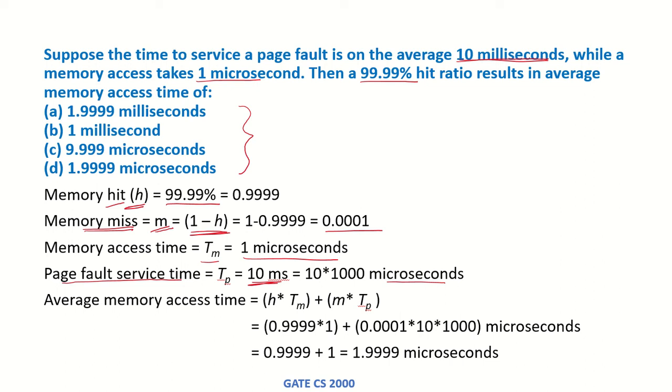So what will be the average memory access time? H times T_m—that means the times the address was found in the memory, it was a hit. These many times the memory access time will be taken, plus all the times that it was a miss, that means there was a page fault, times the page fault service time.